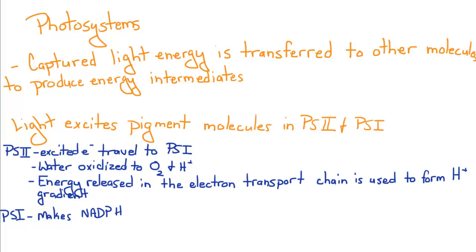Photosystem II, the excited electrons are going to travel to photosystem I. Water is going to be oxidized to form oxygen gas and hydrogen ions.